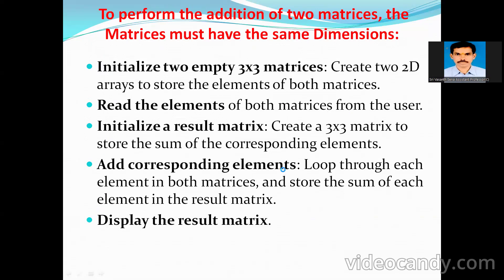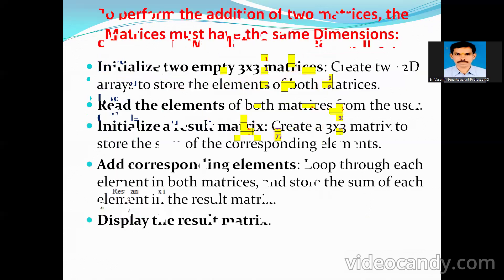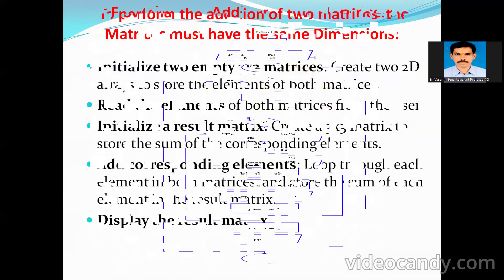Once you read the elements, initialize the resultant matrix C array of 3×3. Add corresponding values: for example, A[1,1] plus B[1,1] = 1+11 = 12, stored in C[1,1]. Similarly, A[1,2] = 2, B[1,2] = 22, so 2+22 = 24, stored at C[1,2]. Finally, display the result matrix.